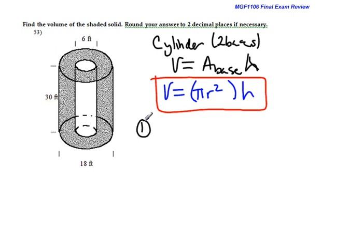Number one, we're going to use the outside cylinder. First things first, we need to be careful. The diameter is 18, so my radius will be 9 feet. My height of the cylinder is 30 feet. So now I'm going to plug it into my formula.